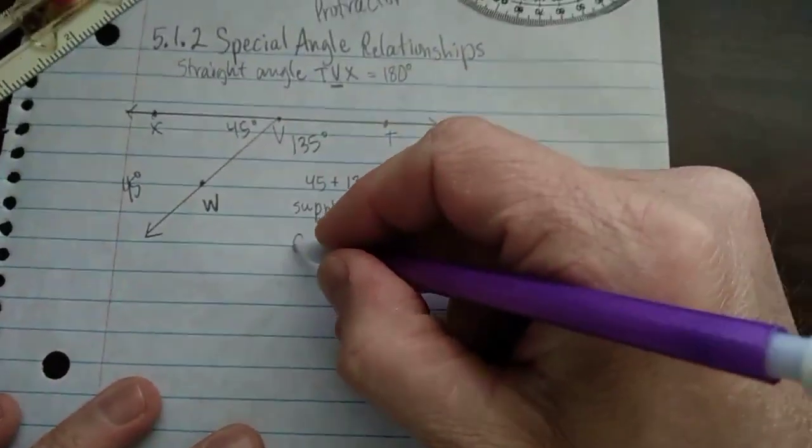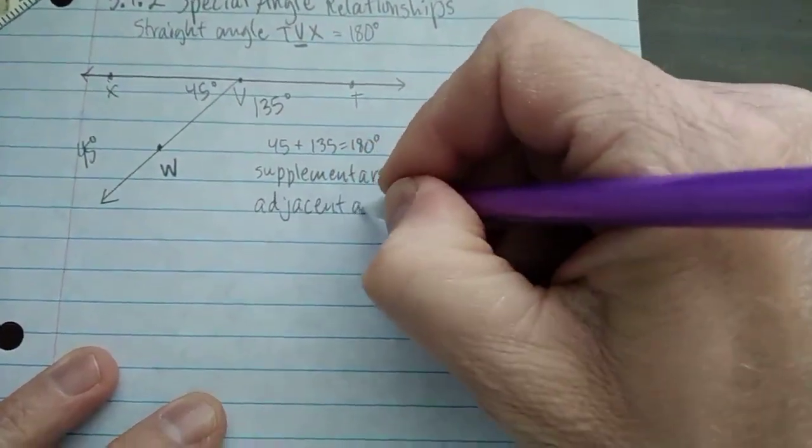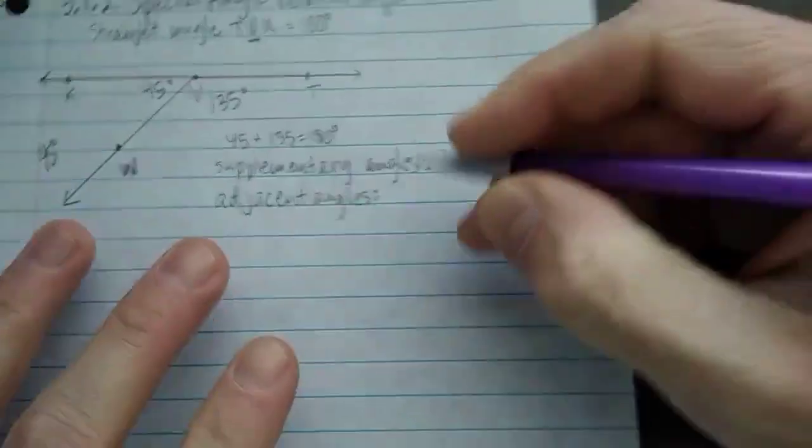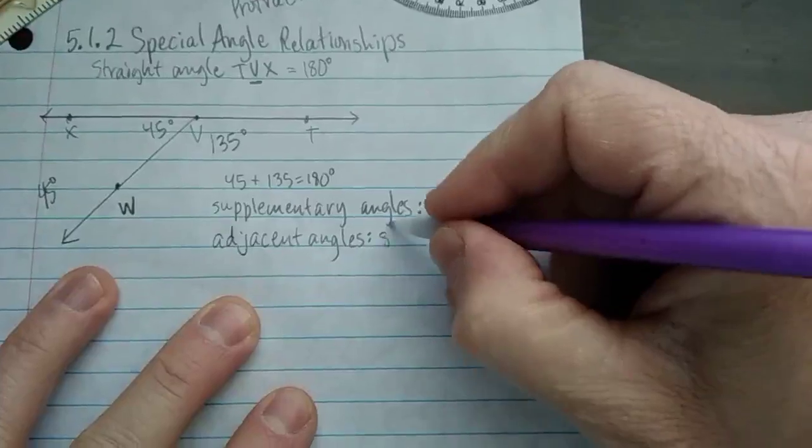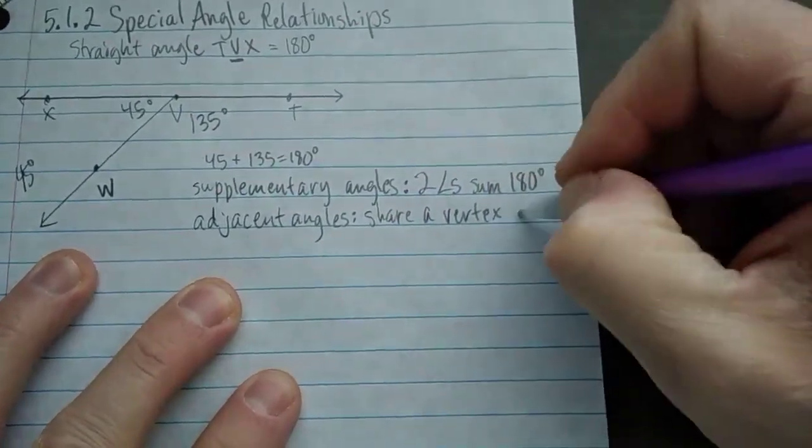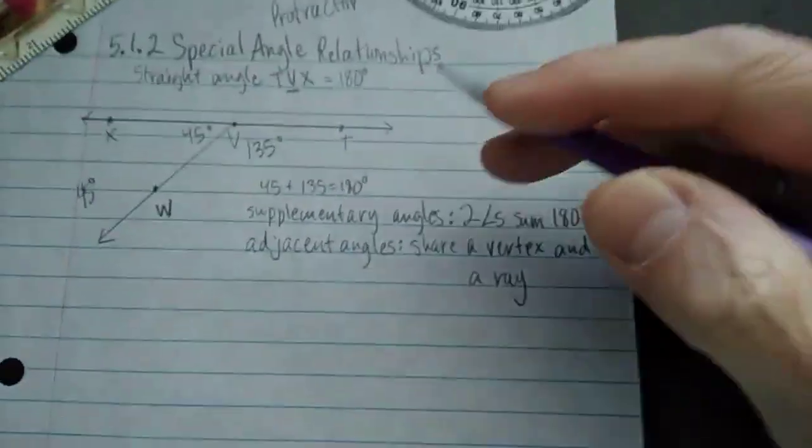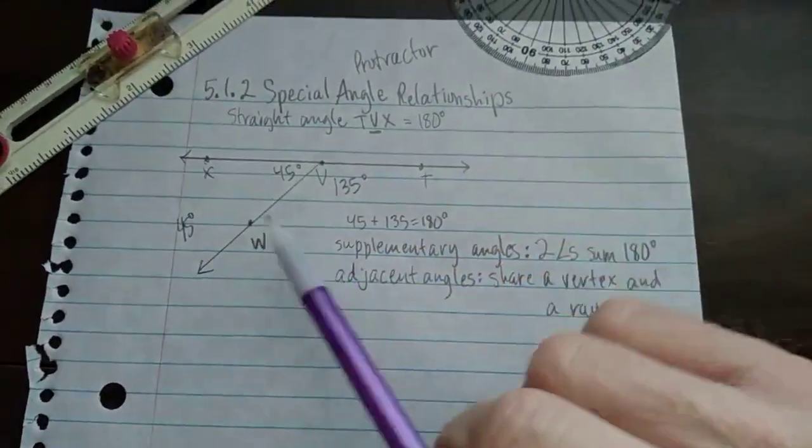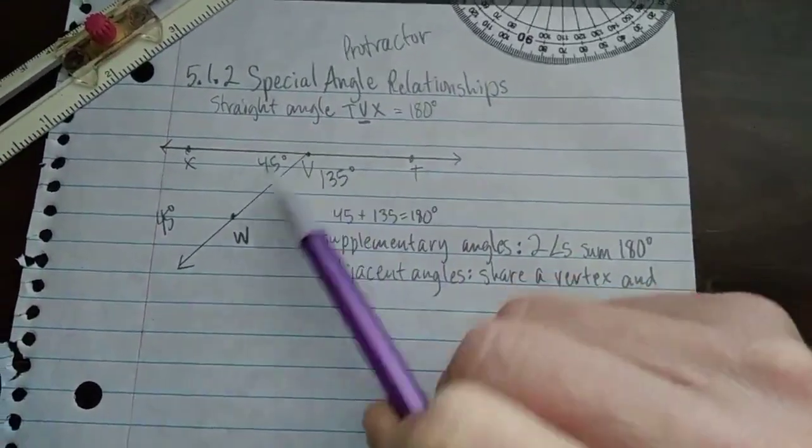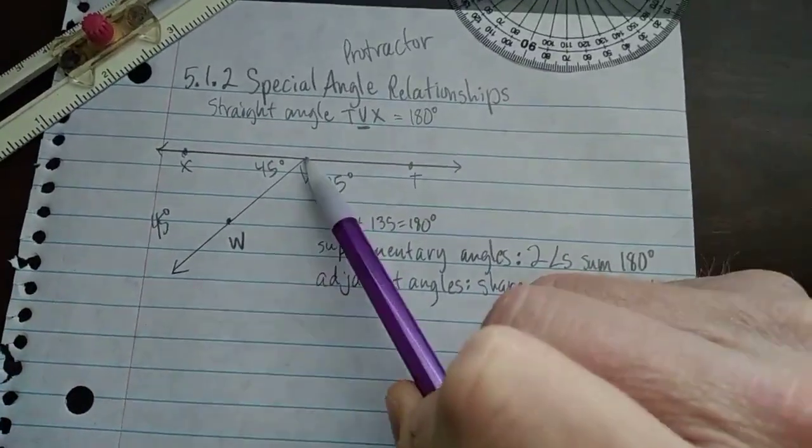Now, another term is adjacent angles. Now adjacent angles share a vertex and a ray. So notice that these are also adjacent angles. Angle XVW is adjacent to TVW because they share this vertex, V, and this ray, VW.